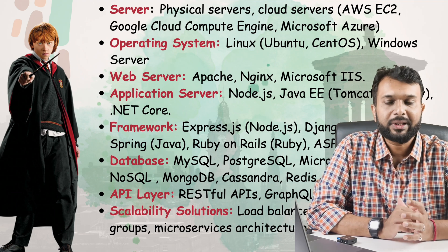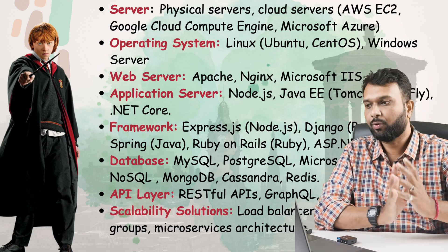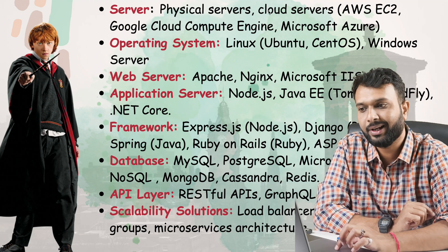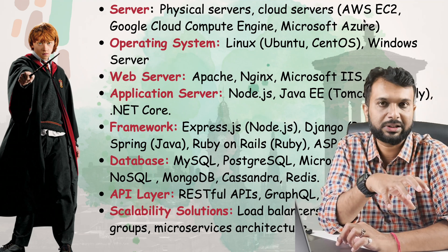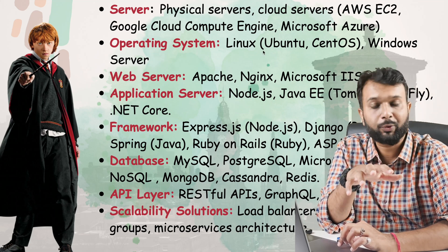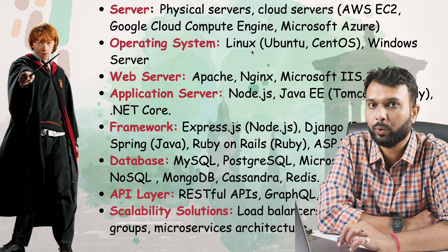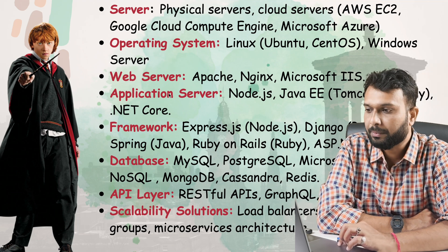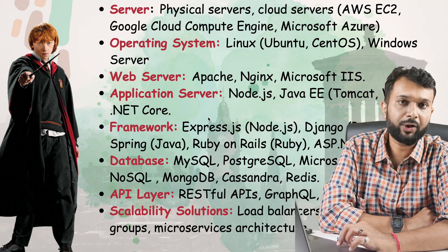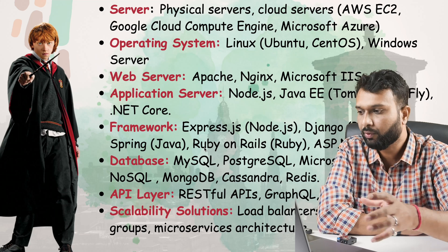Backend is not just a simple server where you deploy your code — there are many many things. For servers, we have on-premises physical servers and cloud-based services like AWS EC2, GCP, and Microsoft Azure. For operating systems, on-premises servers use Ubuntu, Linux, or Windows. Web servers include Apache and Nginx. Application servers include Node.js, Java, Tomcat, Wildfly, and .NET. The framework depends on what language the application is built in.